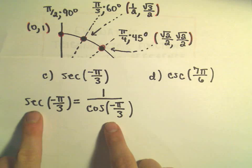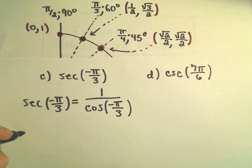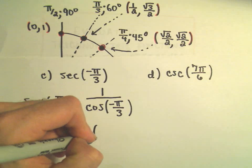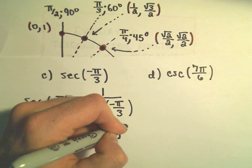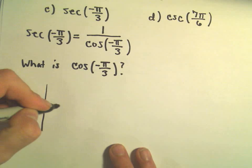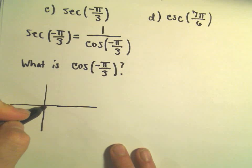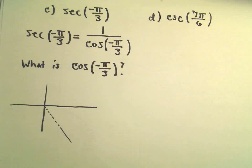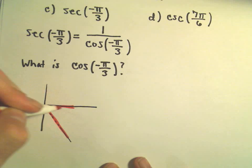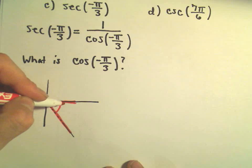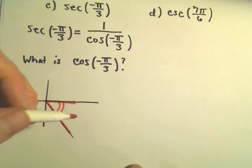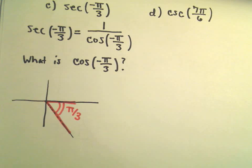Now I'm going to try to evaluate this. The question is: what is the value of cosine of negative pi over 3? I'm going to think about my angle and my reference angle. Negative pi over 3 would put us down in the fourth quadrant. The reference angle is just the angle between 0 degrees and 90 degrees made by the terminal ray and the x-axis. So the reference angle is simply going to be equal to pi over 3.